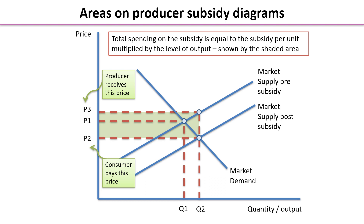So here we have our market demand, our market supply pre-subsidy, giving us an original price of P1 and market output of Q1. We've applied our subsidy, so we have a parallel supply curve, shifting the supply curve to the right and a new market equilibrium at P2, Q2.